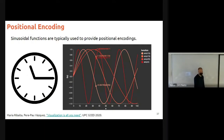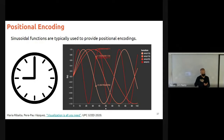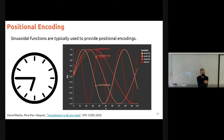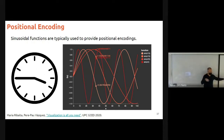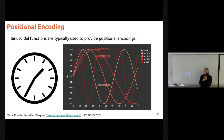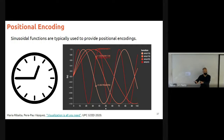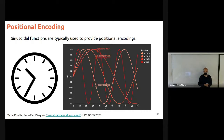Positional encodings are based on sinusoids of different frequencies — you sum sinusoids of different frequencies together. An intuitive analogy: it's exactly the same as a watch, which has two hands rotating at different frequencies. When you combine the two pieces of information, you know what time of day it is. Positional encodings do the same with sinusoids — not just two, but many — to encode position in a sequence.